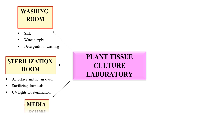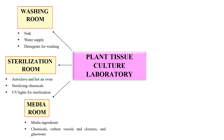The next area for the Plant Tissue Culture Lab should be the media room. This is the room in which you will prepare the media. This room should be equipped with all media ingredients — all the chemicals, culture vessels, and glassware — because you have to prepare your media in this particular room.